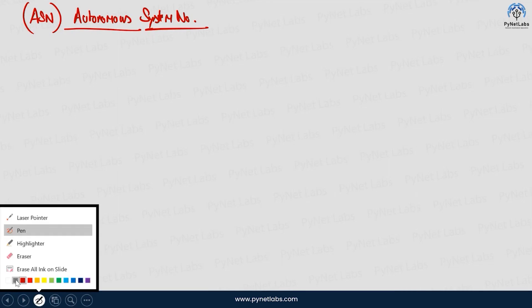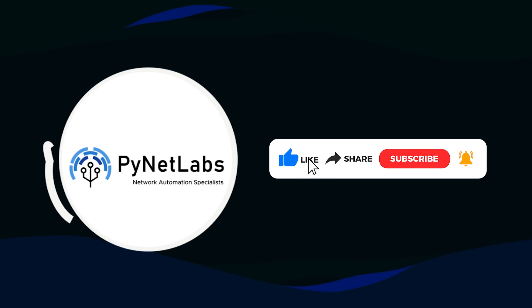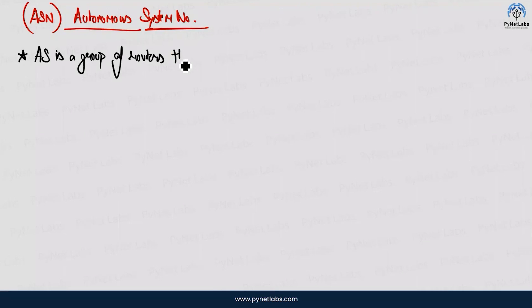So to define the statement, I'll just write the point that the AS is actually a group of routers. AS is a group of routers that shares the similar routing policies. If you enjoyed the content of the video, don't forget to like and share the video and subscribe to our channel. Under a single administrative domain.